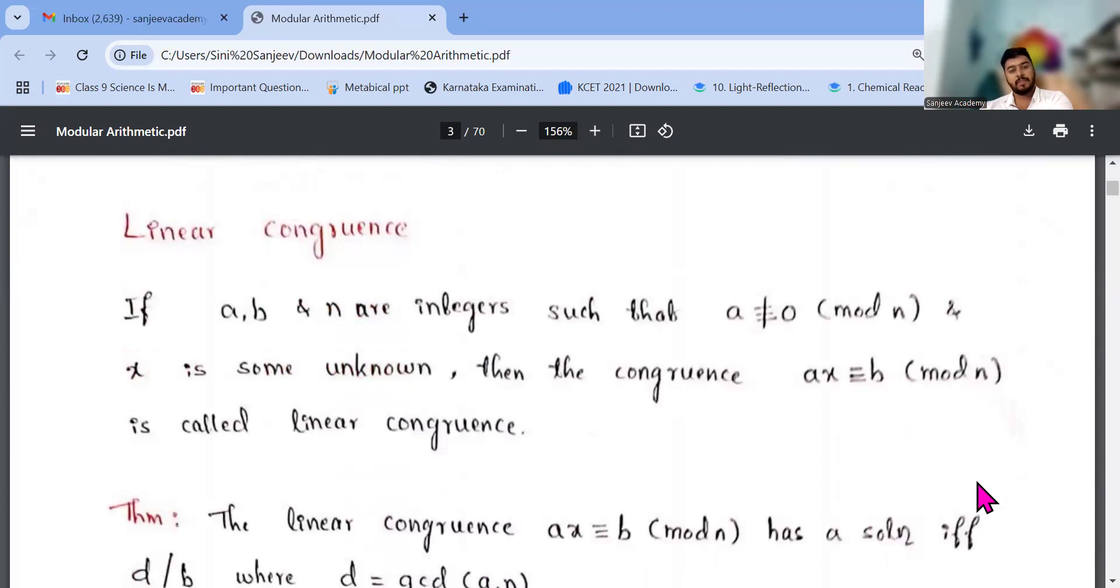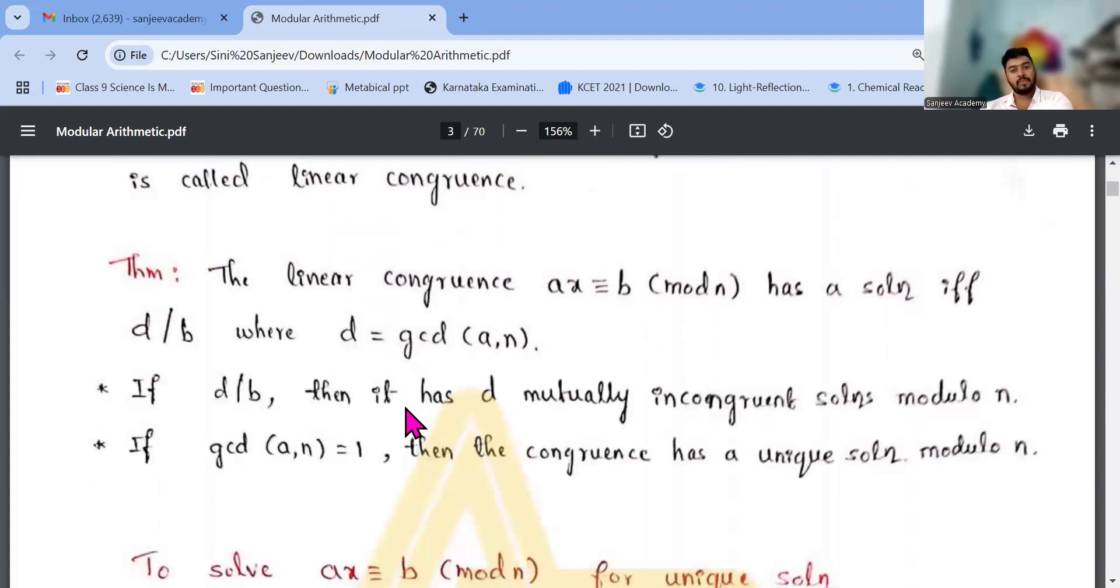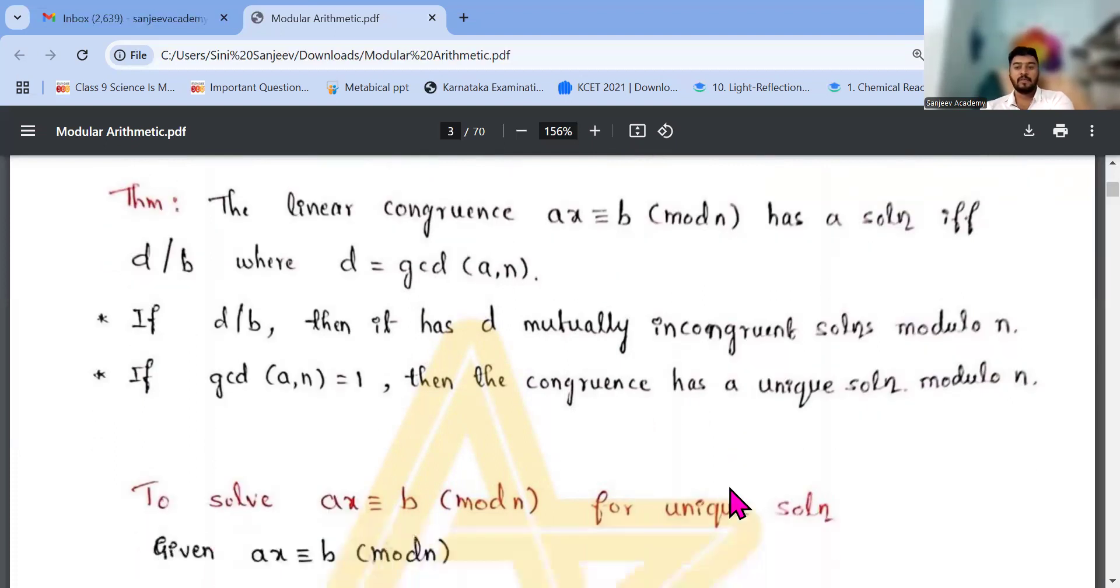The linear congruence. If a, b, and n are integers such that a is not congruent to 0 mod n and x is some unknown, ax congruent to b mod n is called linear congruence. The linear congruence ax congruent to b mod n has a solution if d divides b, where d is gcd of a comma n. And if d divides b, then it is d mutually congruent solutions mod n. And if gcd a comma n equals 1, then congruence has a unique solution mod n.